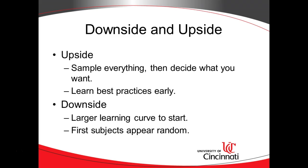This carousel approach isn't one that you see a lot, and there are some downsides. There's a larger learning curve to start off with because we're sampling around a lot of different things. The first subjects are going to appear kind of random — we talk about methods and classes, then jump into debugging, jump into GitHub, and so on.